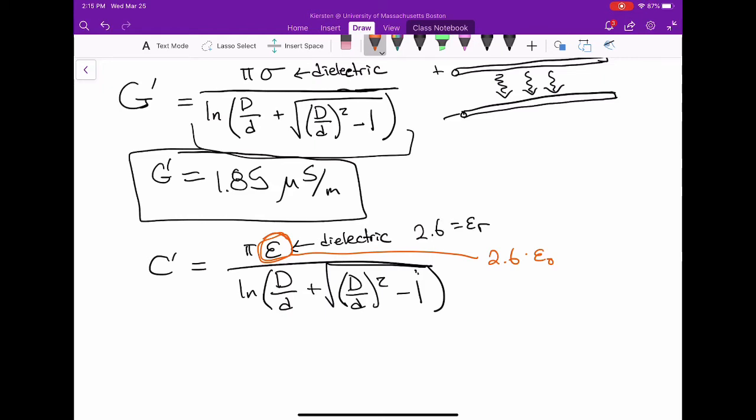The permittivity of free space is 8.854×10⁻¹² farads per meter, so you have to plug that in. If you just put in 2.6, you'll get an obscenely large number. With the correct values, I got a capacitance per unit length of 21.3 picofarads per meter, and that's the end of problem 2.2.